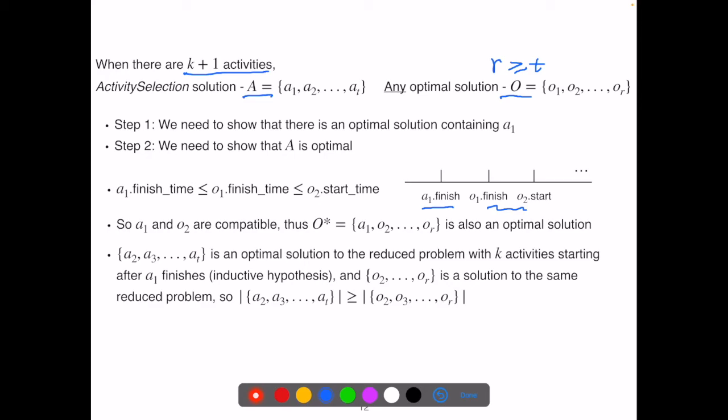Now for the second step. Based on the inductive hypothesis, we know for the reduced problem when the starting time is now set as when a1 finishes, our greedy algorithm provides an optimal solution a2, a3, at. So its cardinality must be greater than or equal to that of o2, o3, or. Adding a1 to both sides will give us A's cardinality and o star's cardinality. Since o star is an optimal solution to the problem with k plus 1 activities to choose from, A is also an optimal solution when we have k plus 1 activities to choose from. Now this finished step 2 and completed the proof of correctness.